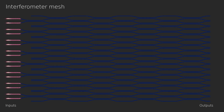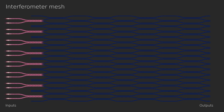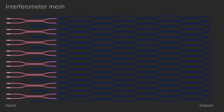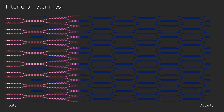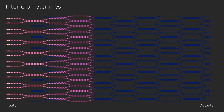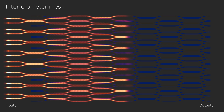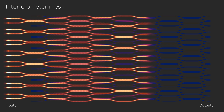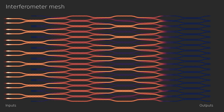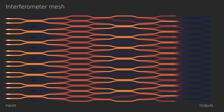Let's scale the photonic circuit up and simulate an entire interferometer mesh. On the left, eight coherent light waves form the input. The light waves are all in phase, so the first coupler has no effect. However, the following couplers transfer the energy back and forth. Let's change to the light intensity visualization, where the energy distribution can be seen more clearly. Overall, not much is happening in this circuit, but it's a good reference for the following modifications.